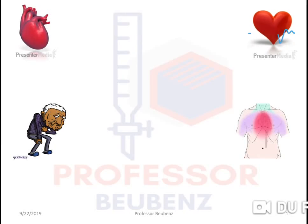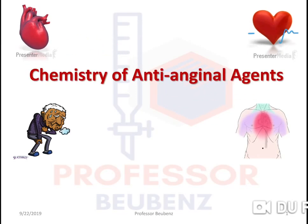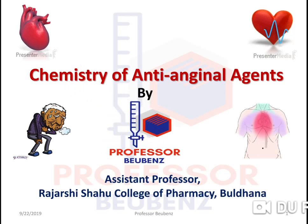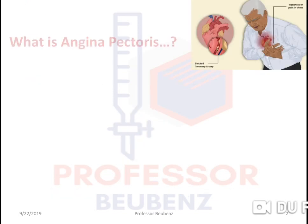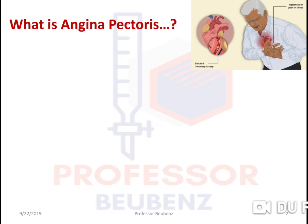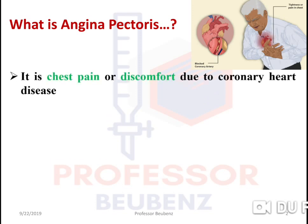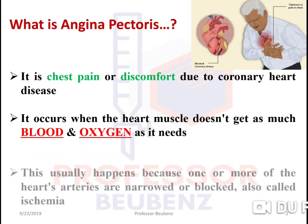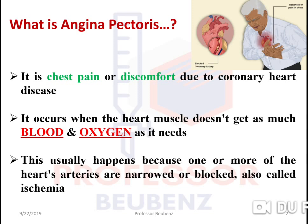Hello friends, welcome back to my channel Professor Bubens. Today we'll see the chemistry of anti-anginal agents. Before starting, we should know what angina pectoris is. Angina pectoris is a chest pain or discomfort due to coronary heart disease. It occurs when the heart muscle doesn't get as much blood and oxygen as it needs.